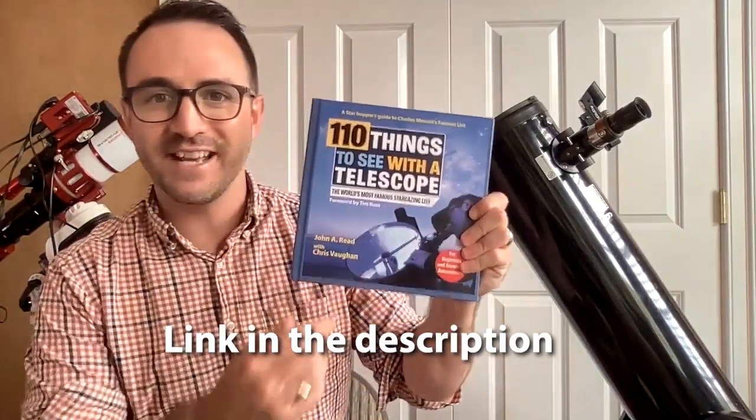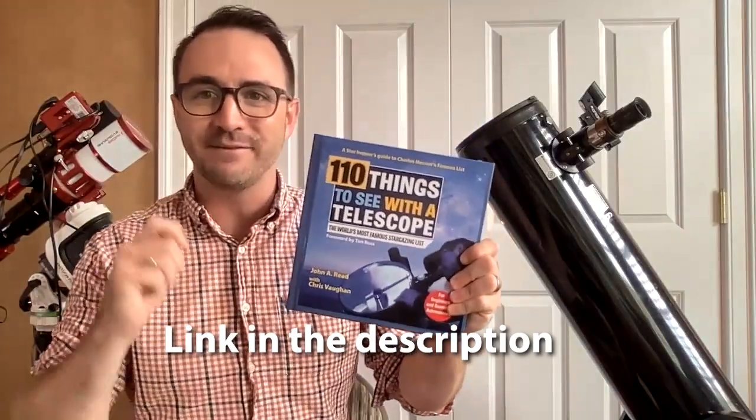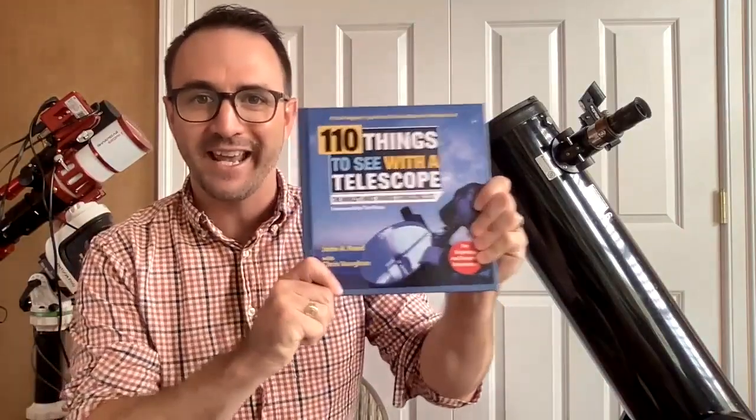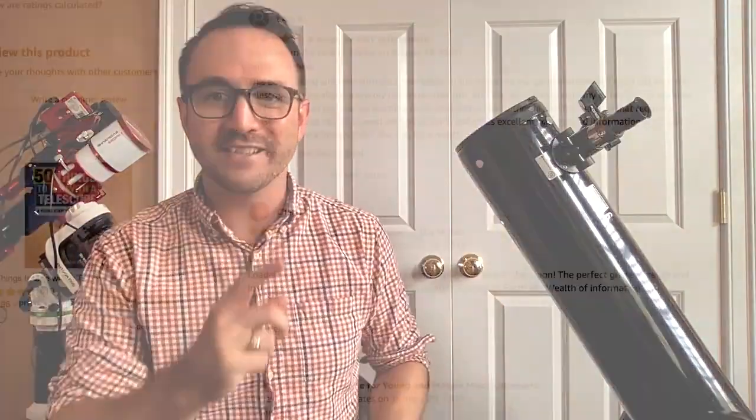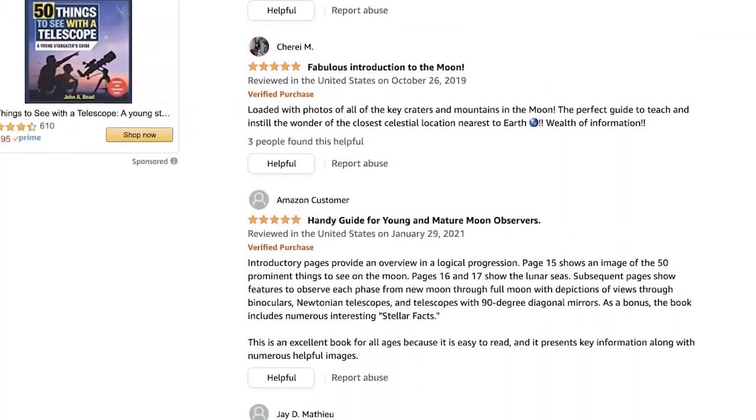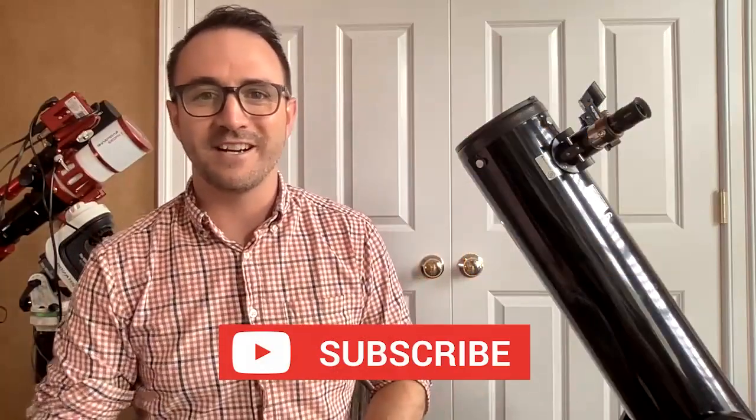Well, I hope you enjoyed this video on the world's most famous stargazing list. If you're interested in observing these wonderful objects and getting credit for your observations, definitely check out 110 Things to See with a Telescope. It's available on Amazon in paperback and hardcover. And don't forget to leave a great review that really helps out us authors. Bonus if you include a picture of your telescope in the review. Please subscribe here to learn to stargaze so you don't miss the next video. Please comment below to let me know you're here. And remember, the future is looking up.